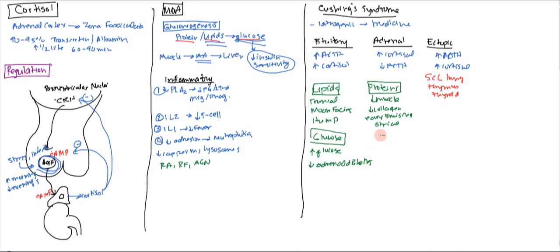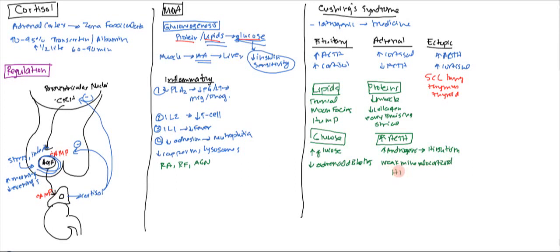Finally, elevated ACTH not only activates cortisol but also activates androgens, which is why some patients will have hirsutism. ACTH can also activate weak mineralocorticoids — it cannot activate aldosterone directly because there is no angiotensin 2 — but those weak mineralocorticoids do cause hypertension.